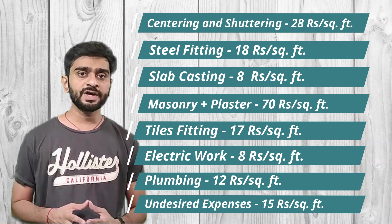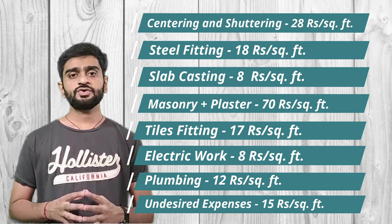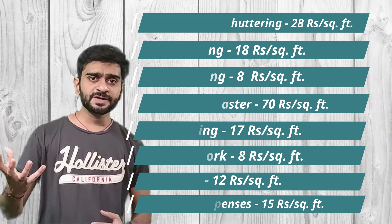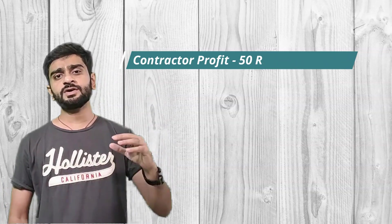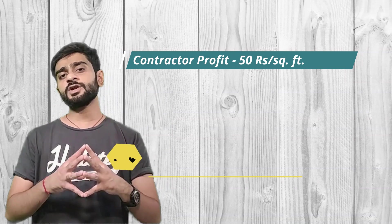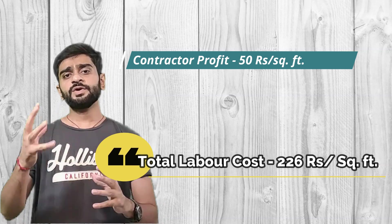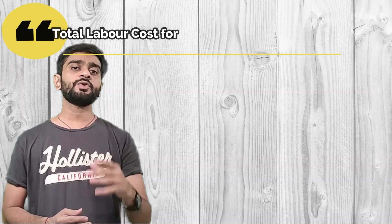Plumbing work is 12 rupees per square feet for labor. These were the main items included in the labor work. Additionally, extra expenses including excavation and extra labor works require about 15 rupees per square feet. The total comes to 176 rupees per square feet. Adding a contractor profit of 50 rupees per square feet, the total labor cost becomes 226 rupees per square feet. For our 1000 square feet house, total labor cost is 226 into 1000, which equals 2,26,000 rupees.